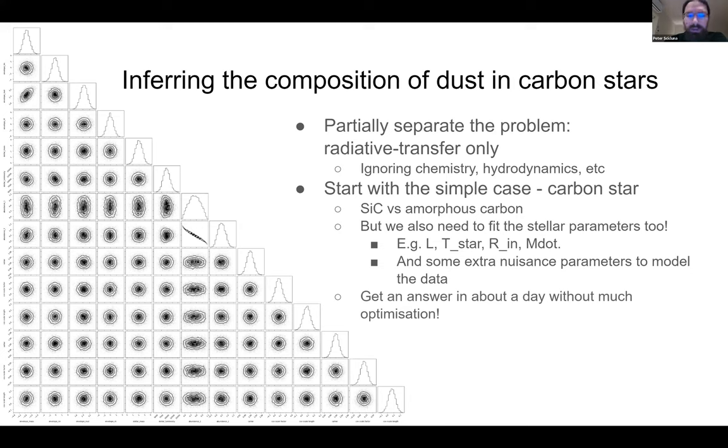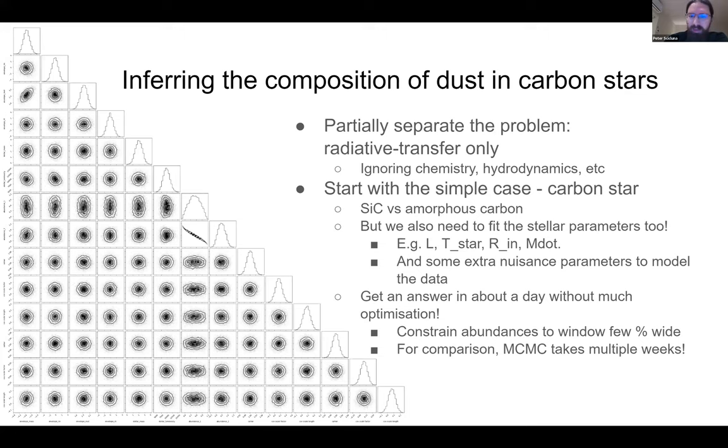But we can't just treat the dust. We have to worry about the stellar parameters, things like luminosity, effective temperature and radius and so on. And we need a few extra bits of nuisance parameters to model the data. Now, when we shove this into Ampere, it gives us an answer in about a day without doing too much optimization. We're still working on speeding that up a little bit because I don't think that's fast enough. And you get constraints on the abundances of the species that are just a few percent wide. And this takes about a day. But we obviously ran a test run with MCMC first. And that takes many weeks. I think after a week, the chains had just about started approaching the end of their burn. And we knew we needed several more weeks to actually finish the run.